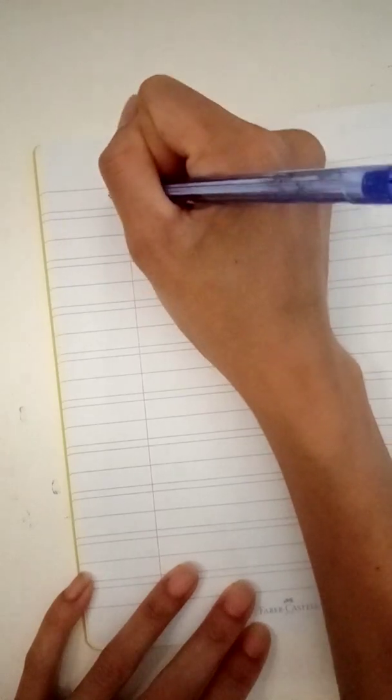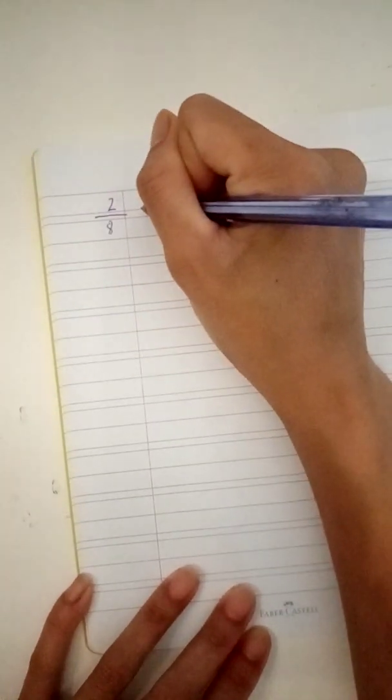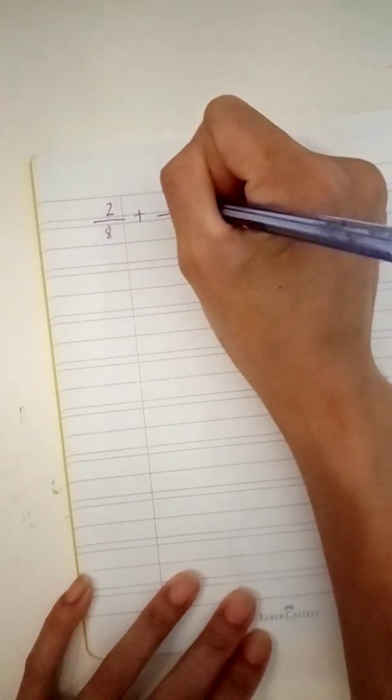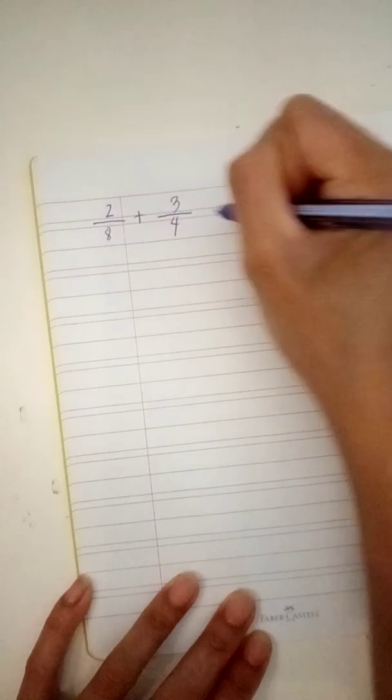Let's proceed another example so you can understand it more. For example, two over eight plus three-fourths equals.